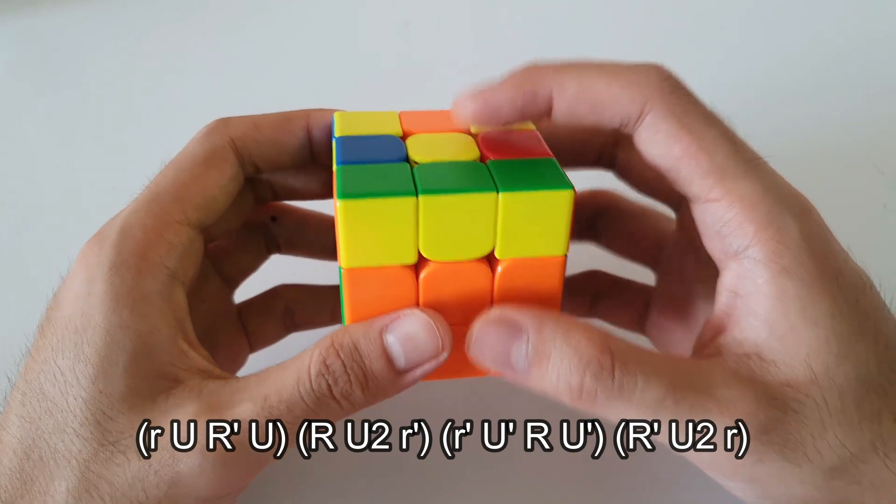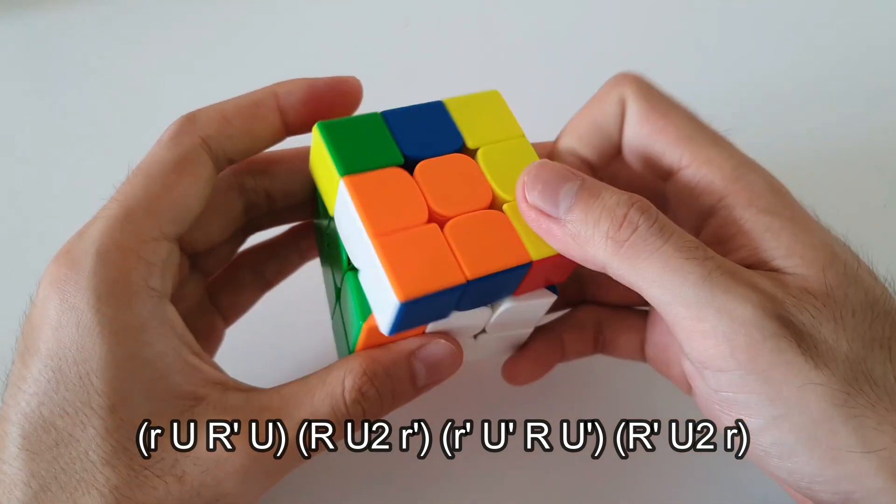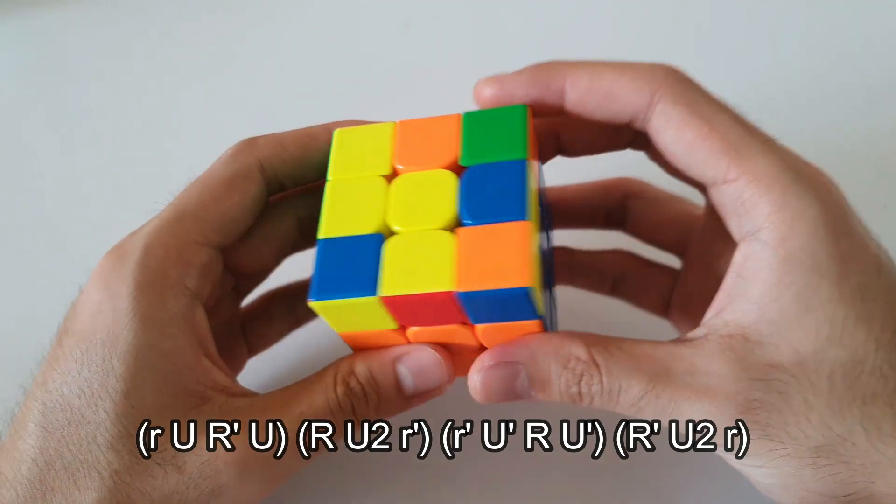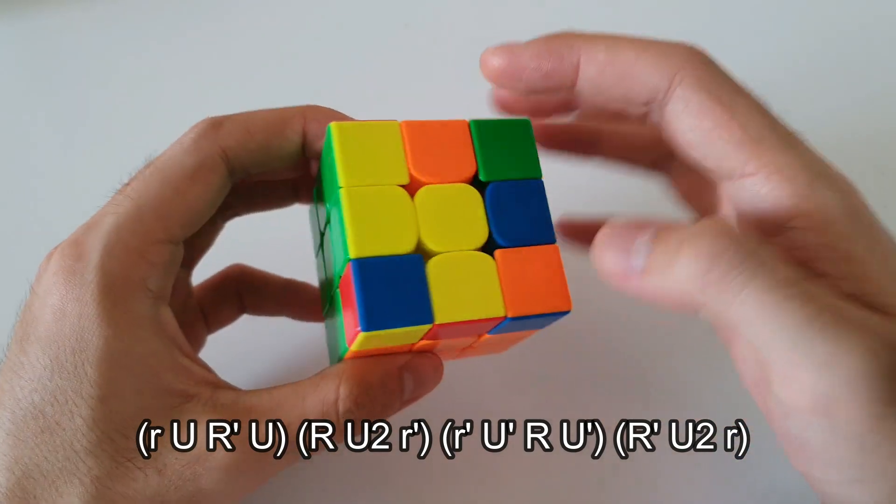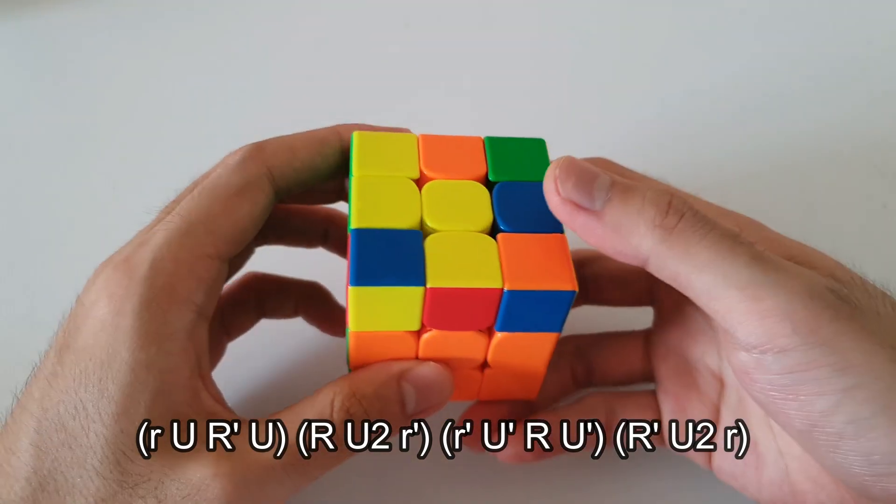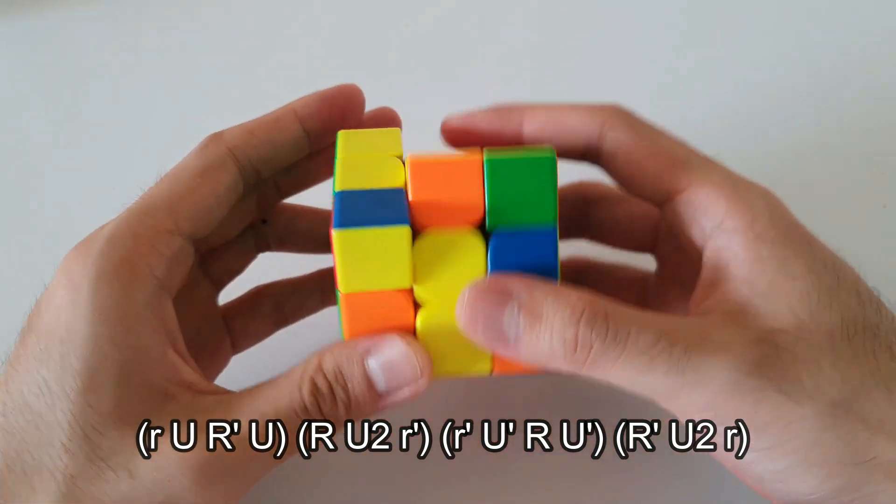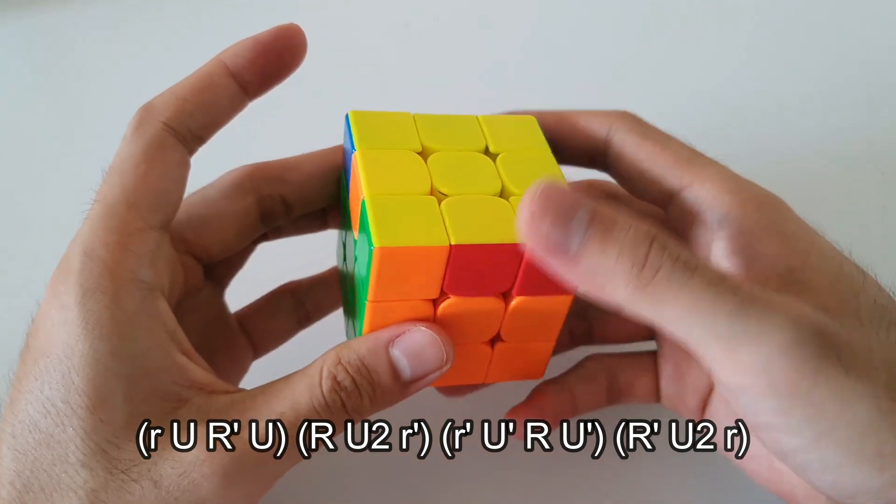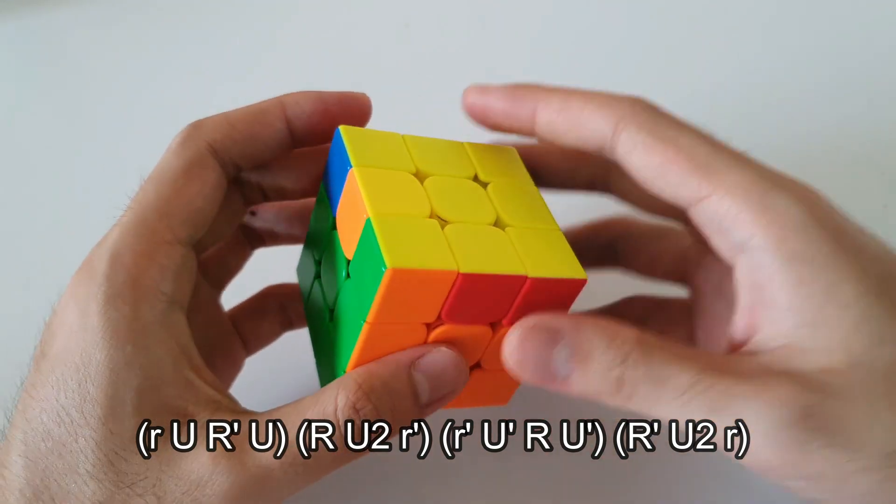So it starts off with a wide move from the front like this. Once you've done that, you get this OLL case, so the small lightning bolt case, which you should recognize. This can be done by a wide back move like this. And that is the algorithm for that case.